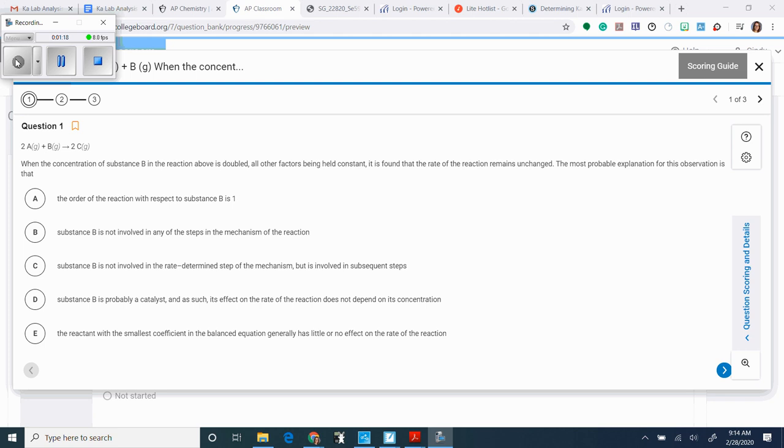The most probable explanation is that A, the order of the reaction – that means monkey – is one. That would not make sense because if it was one, then if I added more, it should make it go a lot faster. B, the substance is not involved in any of the steps. That can't be true because it added up to the overall reaction. Nice job, two is right, very good.